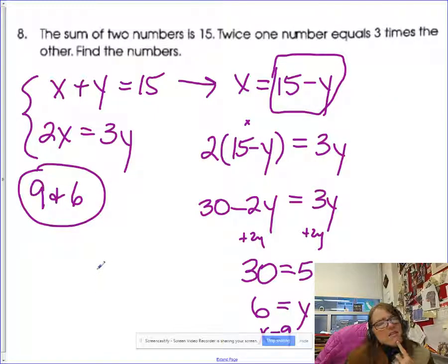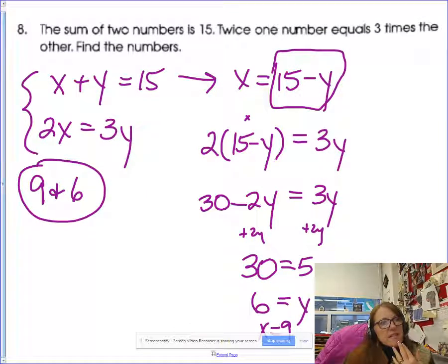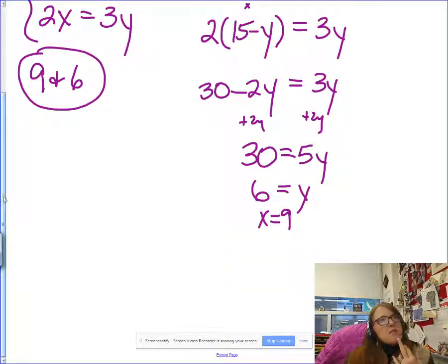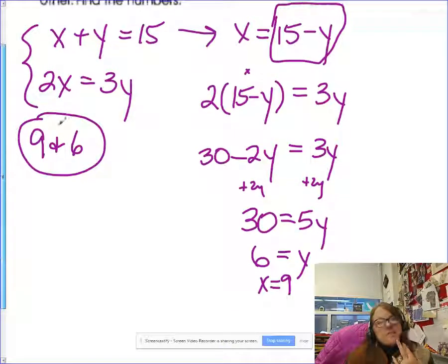Last but not least, number 8. The two numbers you get are 9 and 6. You add them up and you get 15. 2 times 9 is 18. 3 times 6 is 18. I'll push that up a little bit so you can see it with all the work. And there you go.